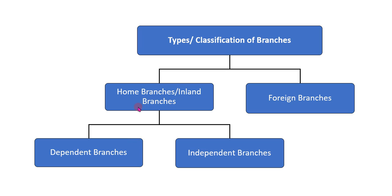Home branches are further classified into two types: dependent branches and independent branches. Dependent branches are those where all decisions and all operations are controlled by the head office or central office. That means these branches are dependent on the head office for all control and operations.